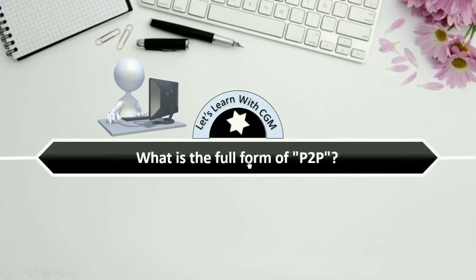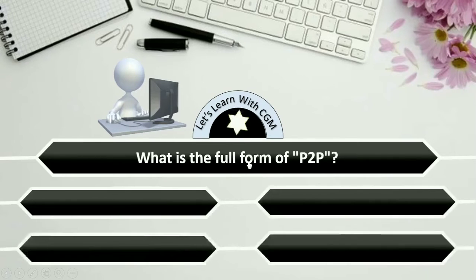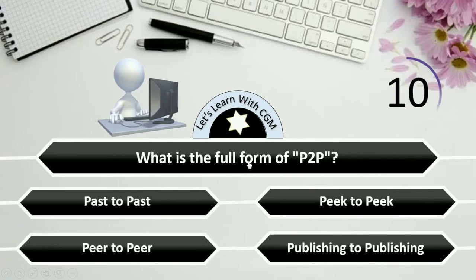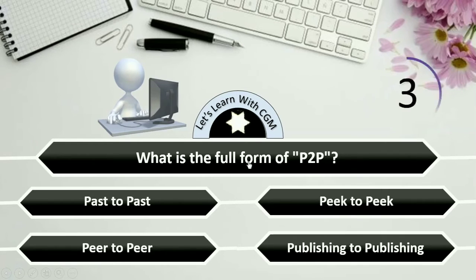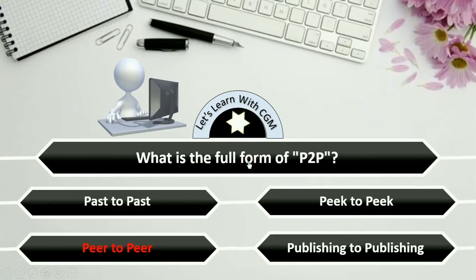What is the full form of P2P? Options are Past to Past, Pick to Pick, Peer to Peer, or Publishing to Publishing. The correct answer is Peer to Peer.